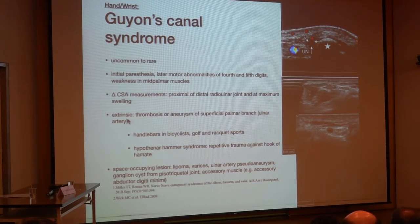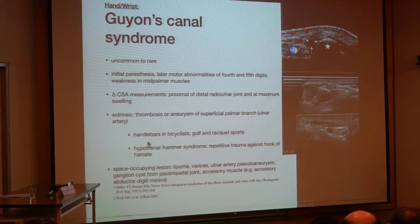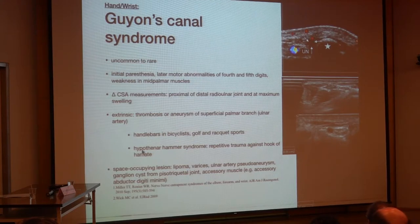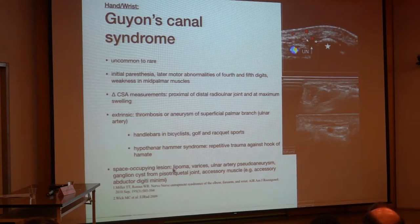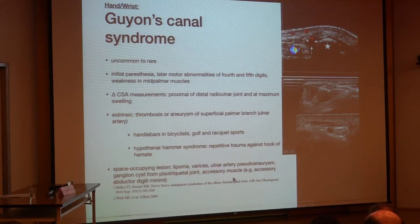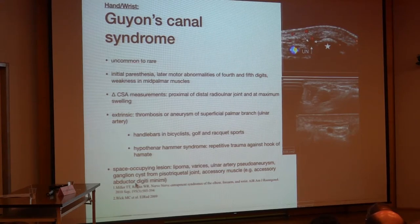The etiology may also be extrinsic, such as thrombosis or aneurysm of the artery, especially found in cyclists, golfers, or racket sports. There is also the hypothenar hammer syndrome with repetitive trauma against the hook of the hamate, which can involve the ulnar nerve. Different space-occupying lesions include lipomas, bursae, pseudo-aneurysm, ganglion formation, and accessory muscles like an accessory abductor digiti minimi muscle.